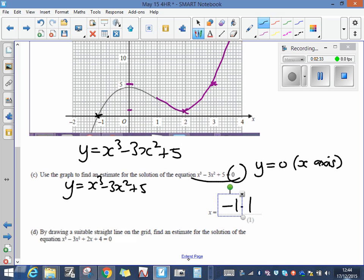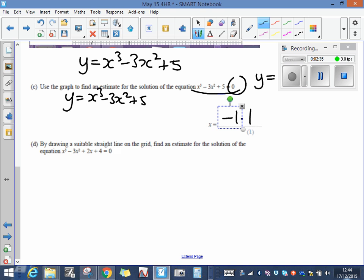The question then says by drawing a suitable straight line on the grid find an estimate for this equation. The easiest way to do that is this: first of all write down the equation of the curve that you have drawn, which is y equals x cubed minus 3x squared plus 5. Then write down the equation that you're trying to solve.